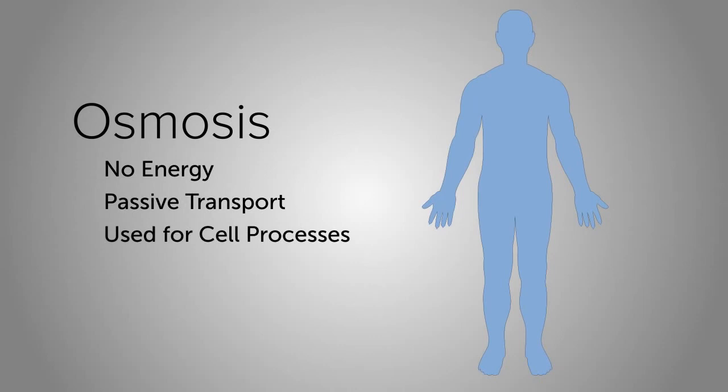The process of osmosis doesn't require any energy in the form of ATP to occur and is known as a form of passive transport. Osmosis is important in the human body for the uptake of water that is used for vital cell processes.